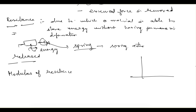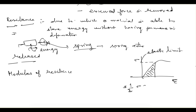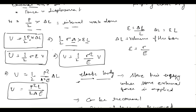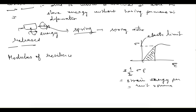The strain energy can be derived from the stress-strain curve. Since we are interested up to the elastic limit — because that is the energy which can be recovered — the area under the stress-strain curve up to the elastic limit gives the strain energy per unit volume. This is half times stress times strain. This strain energy per unit volume is nothing but the modulus of resilience.